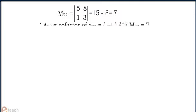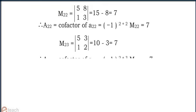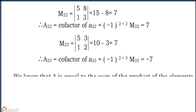A22, that is the cofactor of a22, equals 7, and A23, which is the cofactor of a23, equals minus 7.